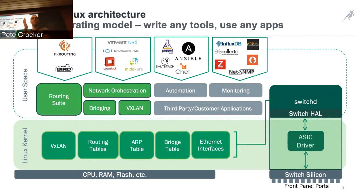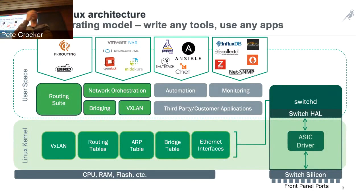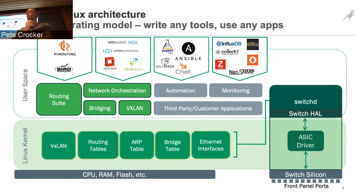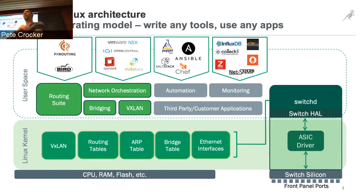Cumulus Networks, for those who don't know, is a vendor that makes a network operating system. The server world has been doing this for 20 years — you no longer buy your servers from the same companies that make your operating system. For some reason, the networking space has been very slow to adopt this concept. You can now go out and buy network switches from a wide variety of hardware vendors and find a network operating system from various vendors — open source packages or commercially supported ones like Cumulus.